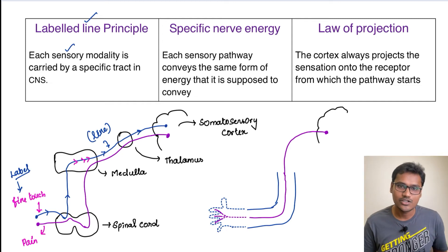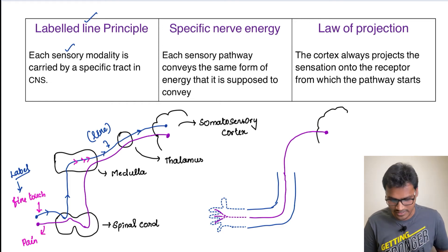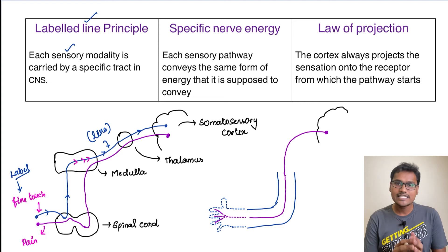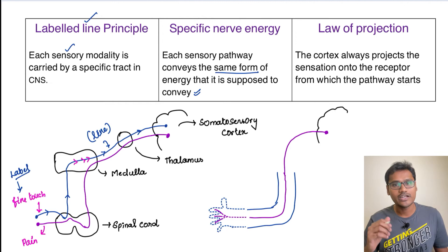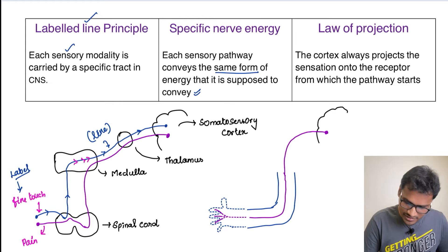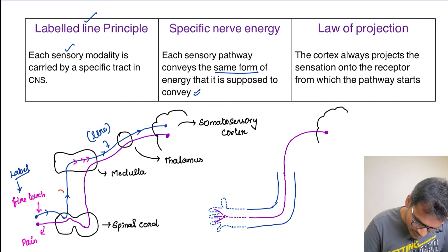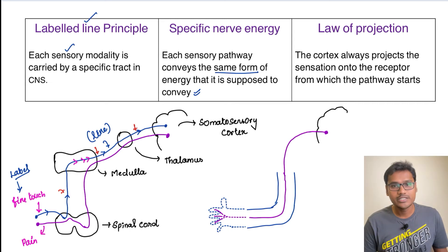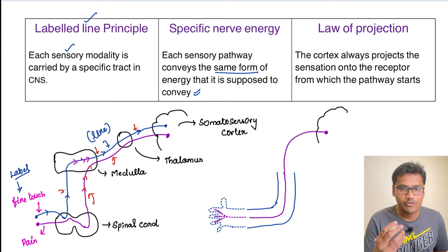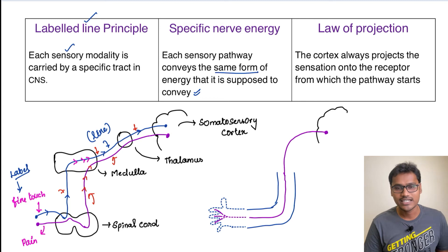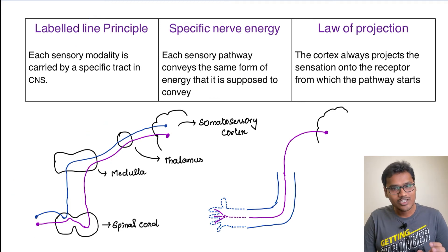Muller's doctrine of specific nerve energy states that each sensory pathway conveys the same form of energy it is supposed to convey to the brain. Stimulating the dorsal column pathway will always produce fine touch sensation, while stimulating the ventrolateral tract will always produce pain and temperature sensation, regardless of the type of stimulus applied.